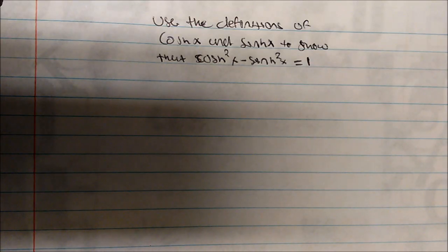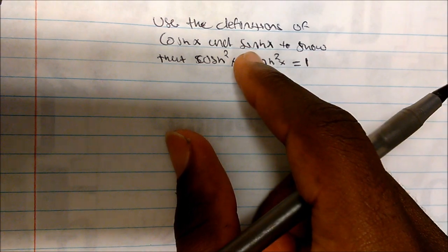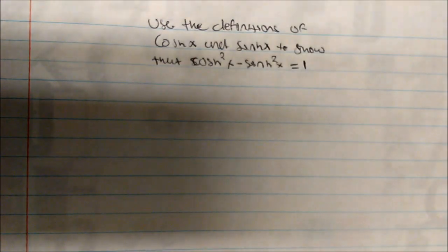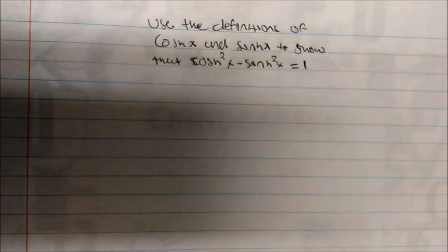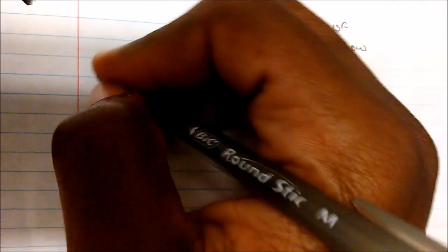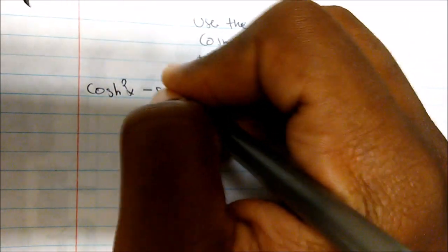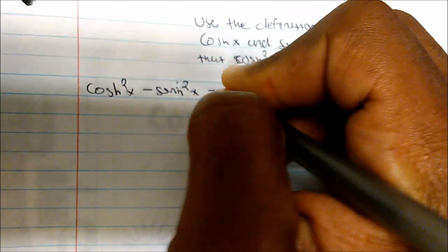In this video, we're going to use the definitions of both cosine hyperbolic x and sine hyperbolic x to show that the identity cosine squared hyperbolic x minus sine squared hyperbolic x equals 1.